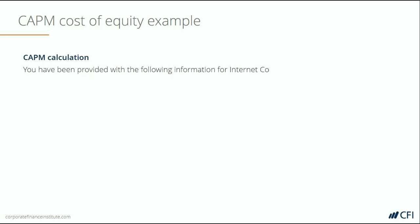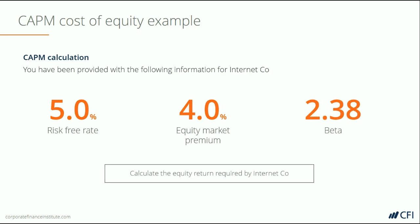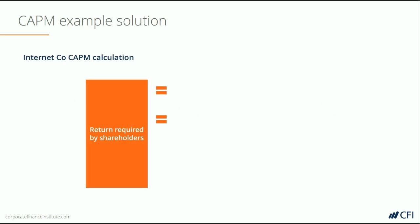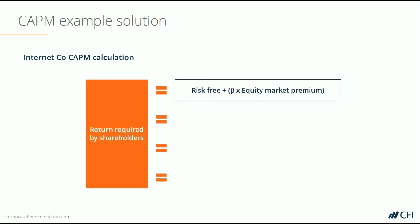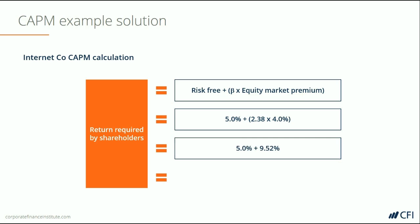Here's the information provided for Internet Co. We want to calculate the cost of equity. The risk-free rate is 5%, the market risk premium is 4%, and the beta is 2.38. Calculate the equity return required by shareholders of Internet Co. The required rate of return is the risk-free rate plus beta times the market risk premium: 5% + (2.38 × 4%) = 5% + 9.52% = 14.52%. So the cost of equity for Internet Co. is 14.52%.